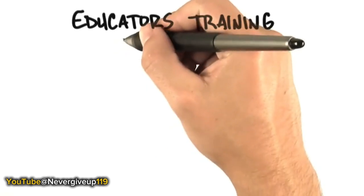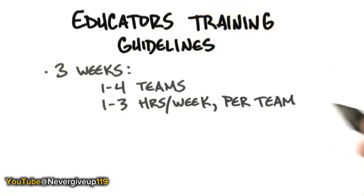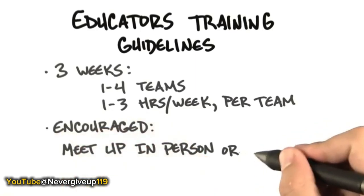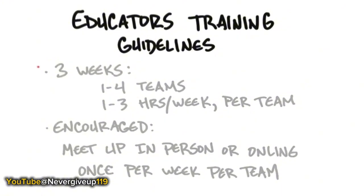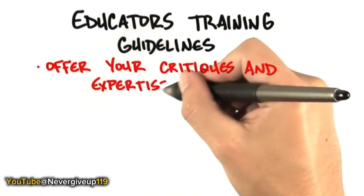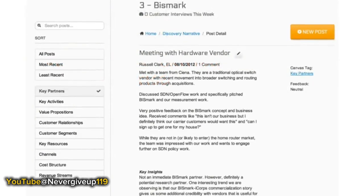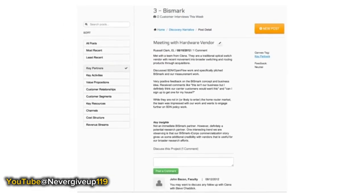Now, if you're a coach or a mentor, what you're responsible for is spending one to three hours per week for every team. You're going to be working with one to four teams for up to three weeks. We encourage you to meet up once a week in person and once a week online via Skype or Google Hangout. What we're really looking for is you to offer your critiques and expertise in their Launchpad Central narratives as they start talking about the customers they're actually interacting with.